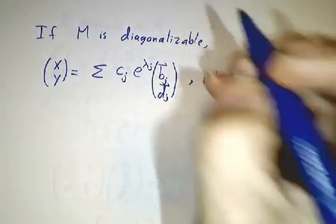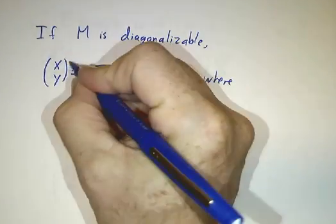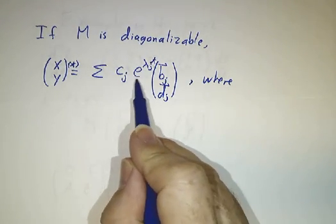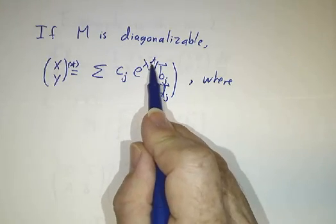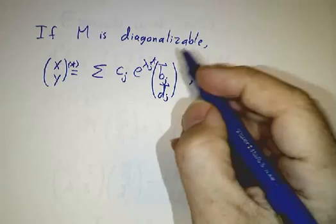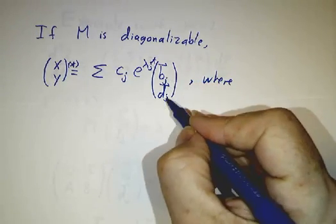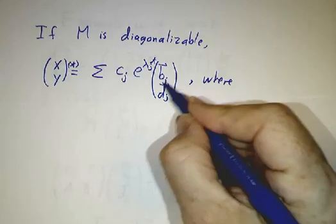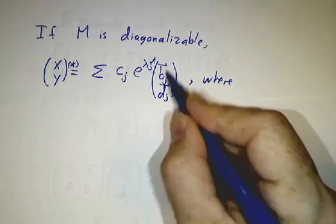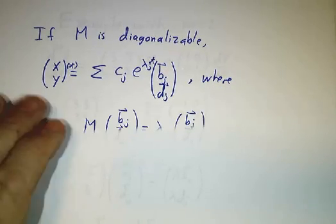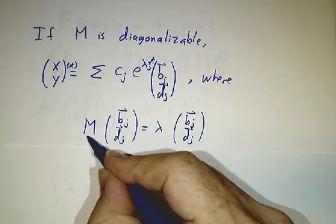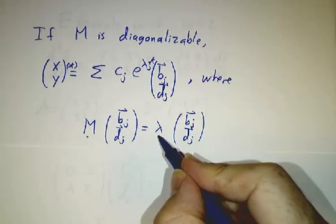is that this at time t is going to be some combination of exponentials. The exponentials go as e to the λt for each eigenvalue. These are eigenvalues of the big matrix. And I'm calling the eigenvector bⱼ dⱼ. So bⱼ is the x part of the eigenvalue and dⱼ is the y, sorry, eigenvector. So in other words, bⱼ and dⱼ together make the eigenvector of M. And that has eigenvalue λ.